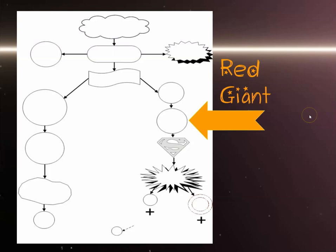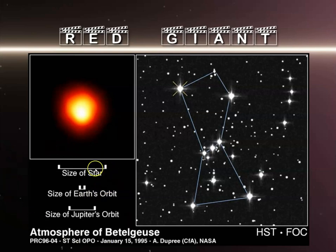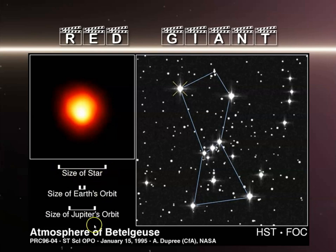A familiar example of a red giant is Betelgeuse. Here's the width of Betelgeuse — this is the size of Earth's orbit as it revolves around the Sun. And in comparison, think about how far Jupiter was out during the solar system walk — this is the orbit of Jupiter. The size of Betelgeuse is bigger than Jupiter's orbit. Very magnificent.